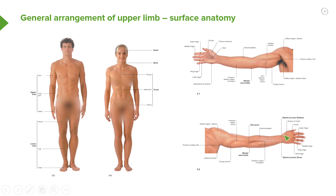Passing to the hand from the posterior view, we can see the thumb, index, middle, ring, and little fingers making up the digits, and the dorsum of the hand. The forearm is connected to the hand via the wrist joint, and we have two styloid processes — of the radius and the ulna. The radius is lateral and the ulna is medial, and both styloid processes can be palpated at the wrist joint.